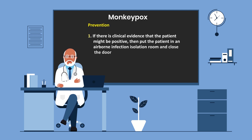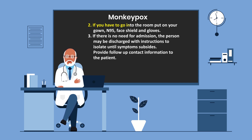Prevention: if there is clinical evidence that the patient might be positive for monkeypox, put the patient in an airborne infection isolation room and close the door. If you have to go into the room, put on your gown, N95 face shield, and gloves. If there is no need for admission, the patient may be discharged with instructions to isolate until symptoms subside. Provide follow-up contact information to the patient.